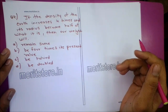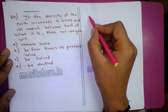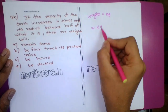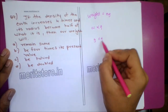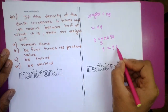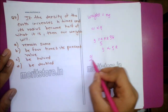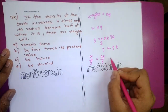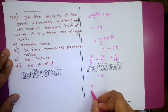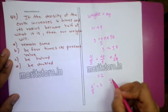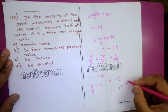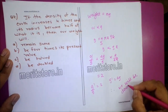Question 2: If the density of the Earth increases 4 times and its radius becomes half, then weight = mg, which is directly proportional to g. Since g = (4/3)πRρG, g is directly proportional to ρR. So g'/g = (4ρ/ρ) × (R/2R) = 2. Therefore g' = 2g.